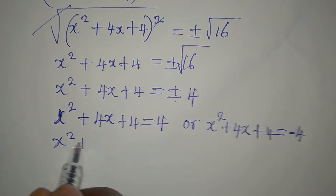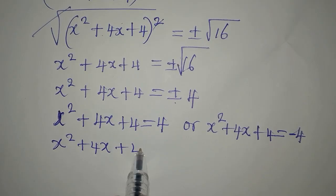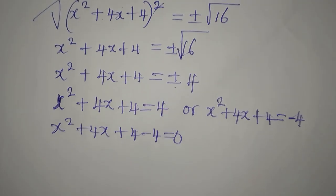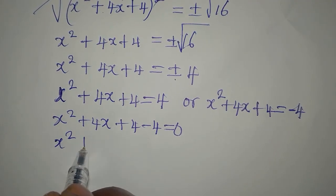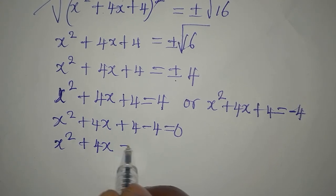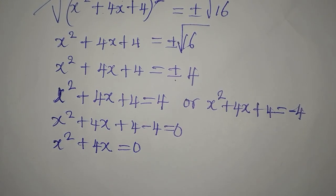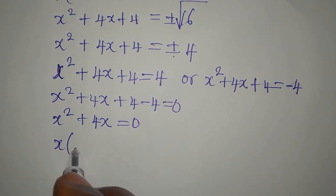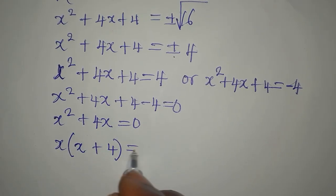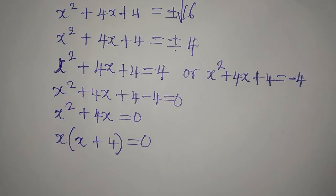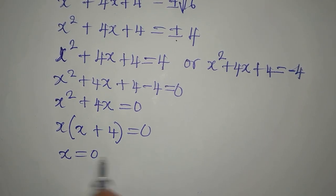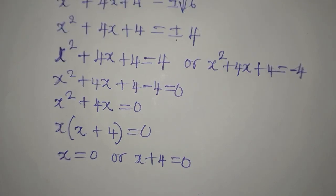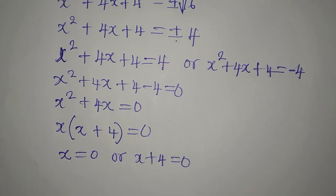From the first equation, we bring 4 to the left: x squared plus 4x plus 4 minus 4 equals 0. Then x squared plus 4x equals 0. This is a quadratic equation, and we can solve this by factorization. So we factor to get x times x plus 4 equals 0.